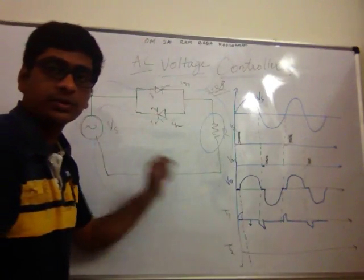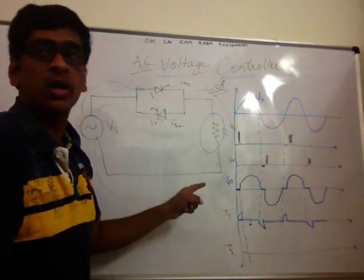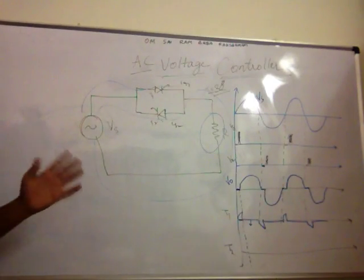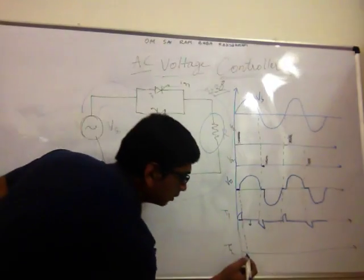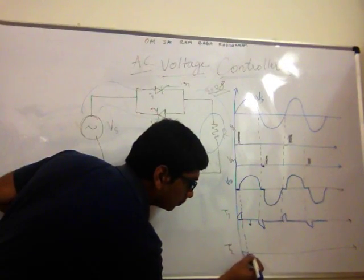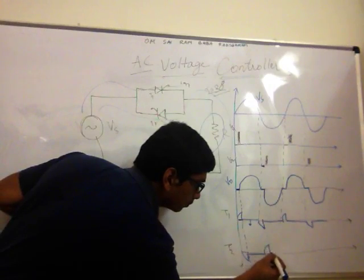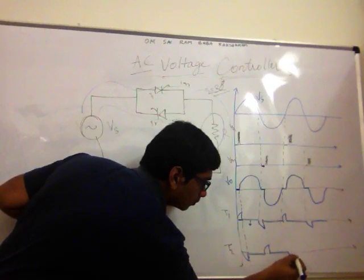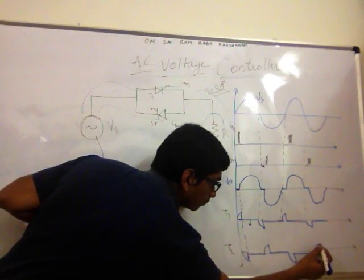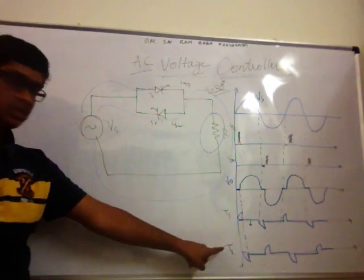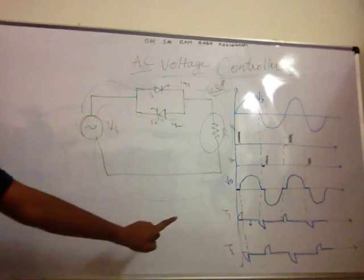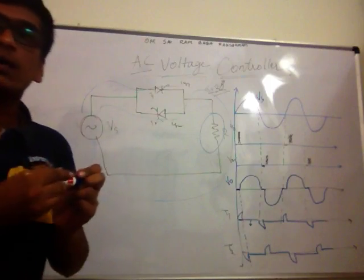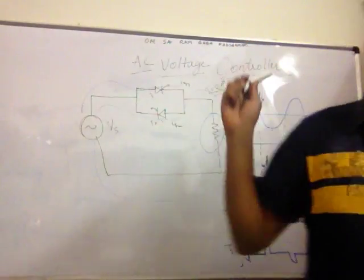So across the thyristor, your waveforms are going to be like this. For T2 it is just the reverse of T1. This is how the AC voltage controller waveforms look like. This is a single-phase AC voltage controller.